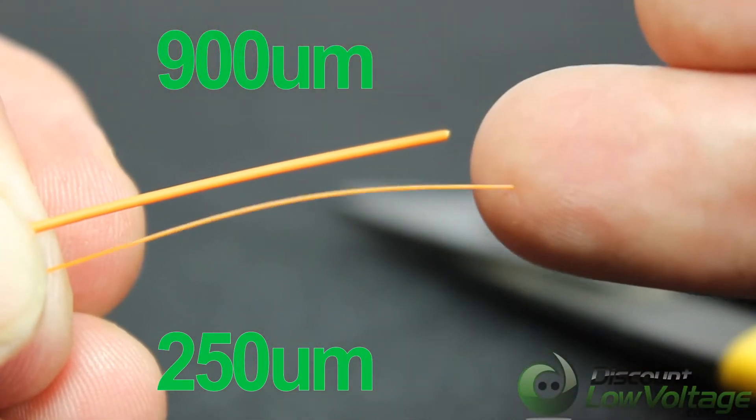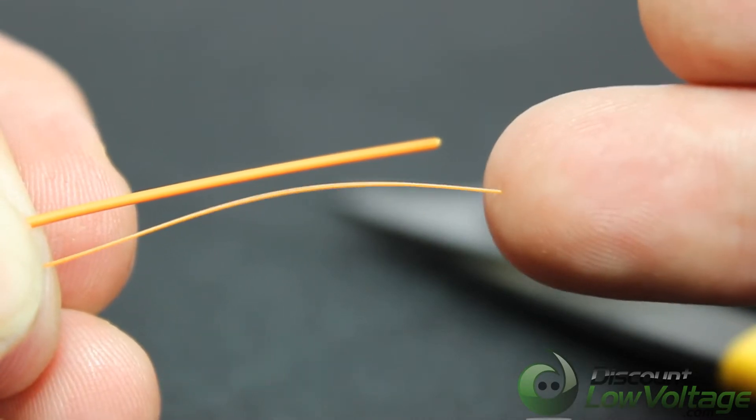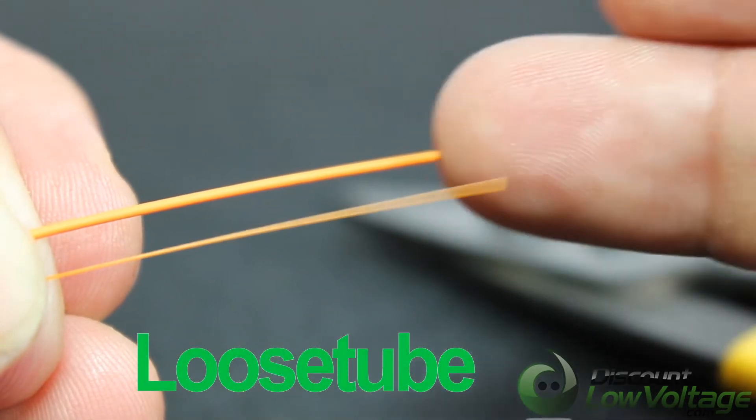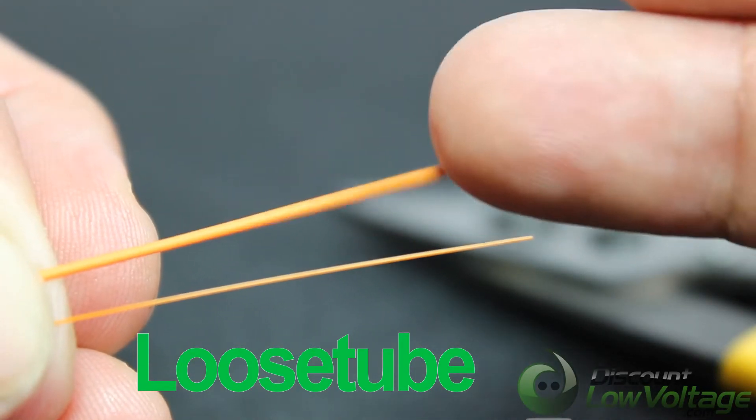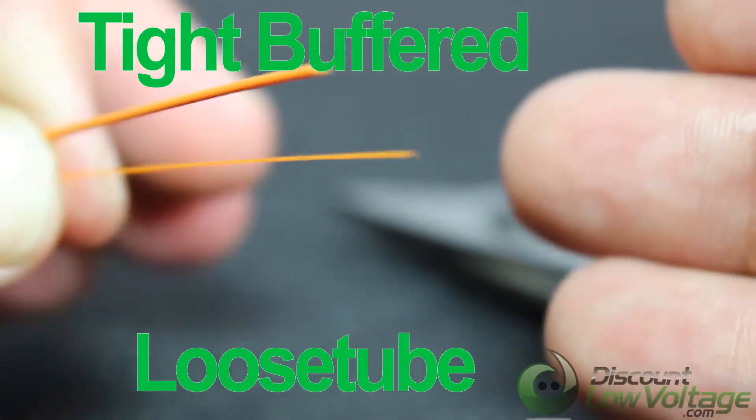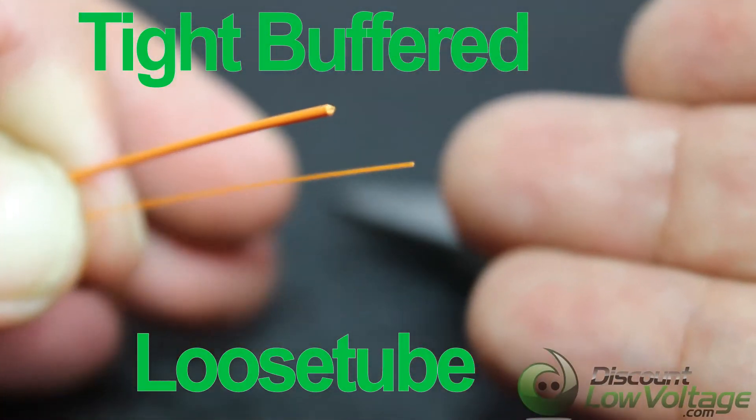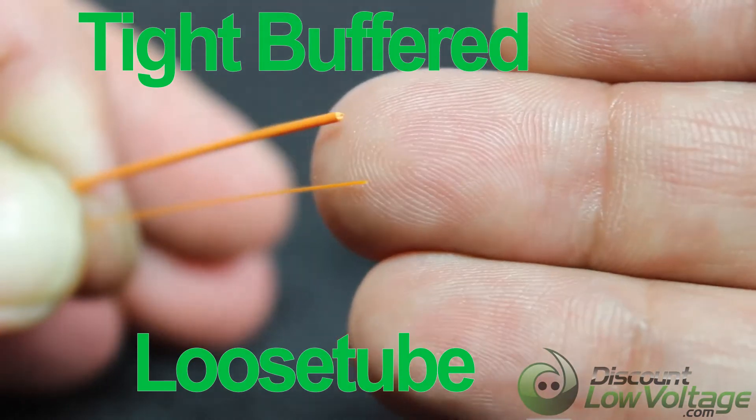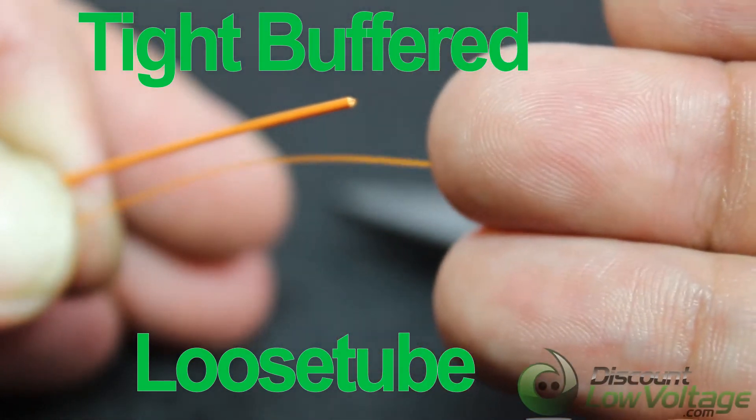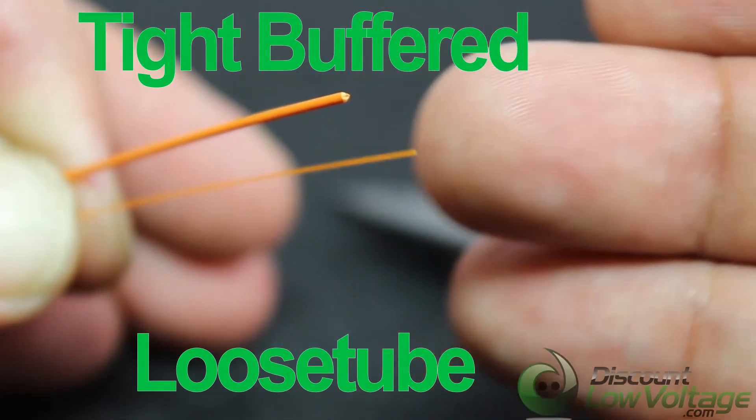Now the 250 size, the smaller of the two, you'll find this commonly manufactured with loose tube fiber optic cable. The other one, the 900, you'll find this commonly installed with tight buffered cables. Now as you can imagine, if you have loose tube fiber, the cable construction will be smaller if you use obviously the smaller of the two.